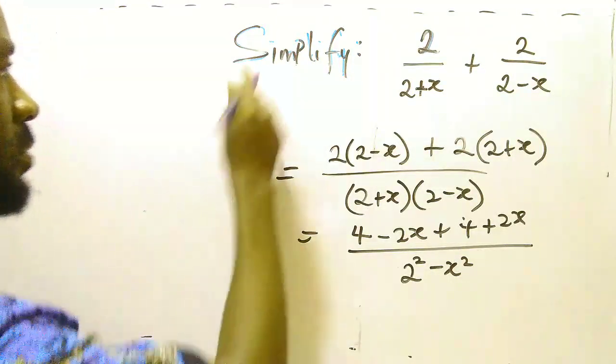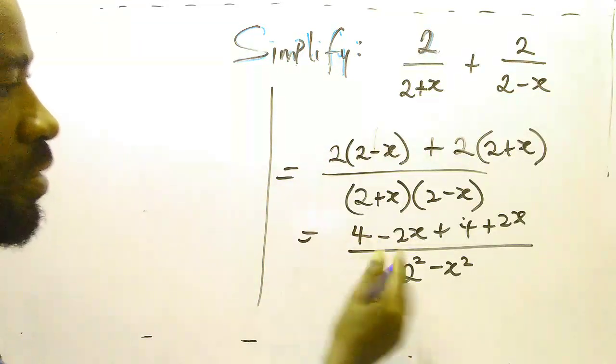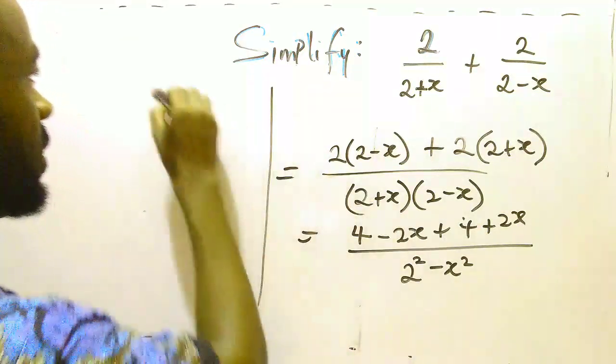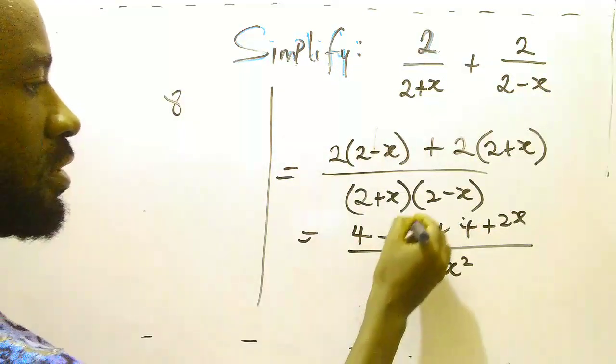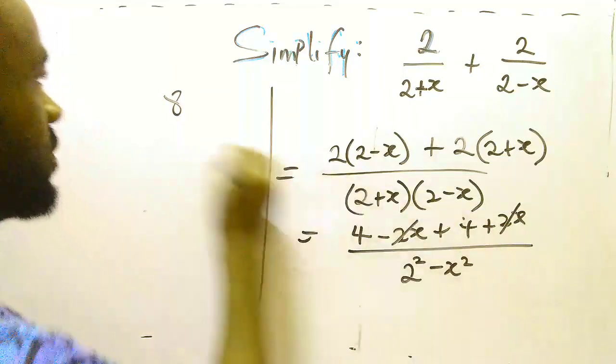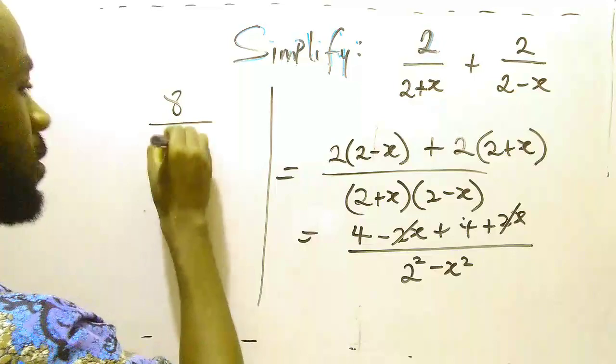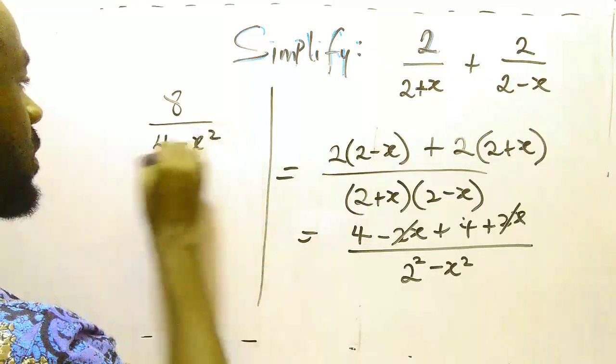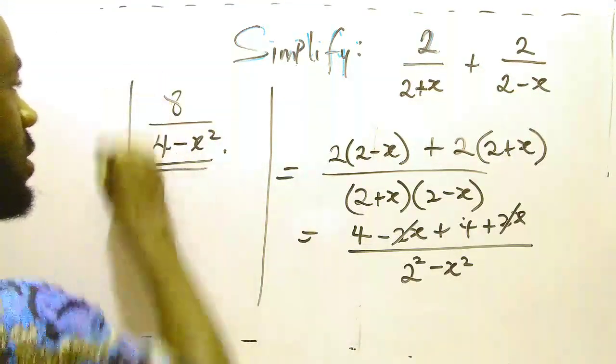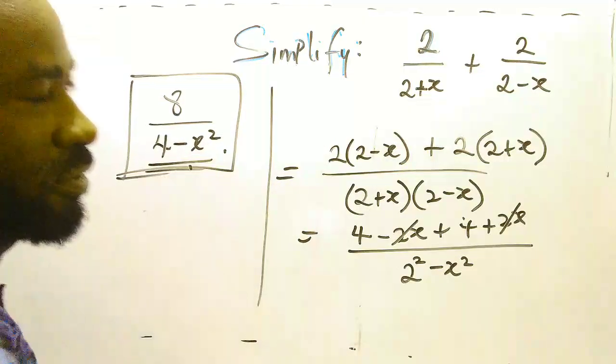Let me come here to complete it. Now we are going to have 4 plus 4 that's 8, and 2x and 2x cancels out. So I'm left with 8 over 2 square which is 4 minus x square, and this is the solution to this problem.